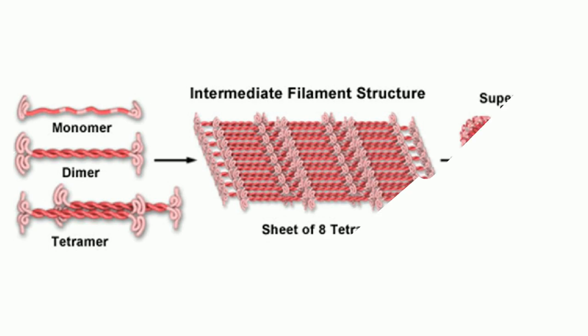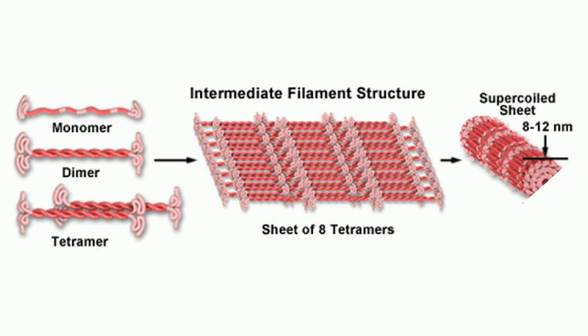Nonetheless, the different types of intermediate filaments share a common structure. Intermediate filaments are composed of smaller strands in the shape of rods. Eight rods are aligned in a staggered array with another eight rods, and the components twist together to form the rope-like conformation.